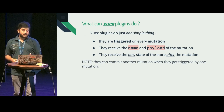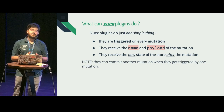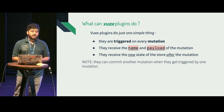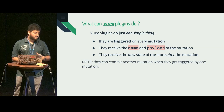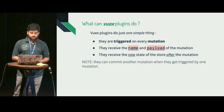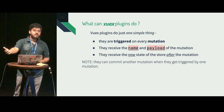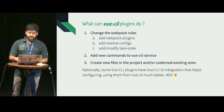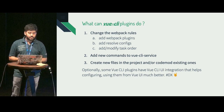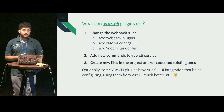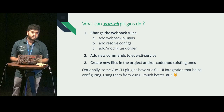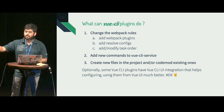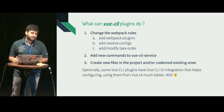What a Vuex plugin can do is really one simple thing — it can listen to mutations, and when a mutation is triggered, it can decide to do something, like save the state to local storage, trigger a new mutation, or validate a user token. Vue CLI plugins can add new webpack plugins into your build structure, add resolve configs, modify the order of build tasks, and add transformers that can transform your code. For example, installing the Vue TypeScript plugin can transform your existing JavaScript code into TypeScript.